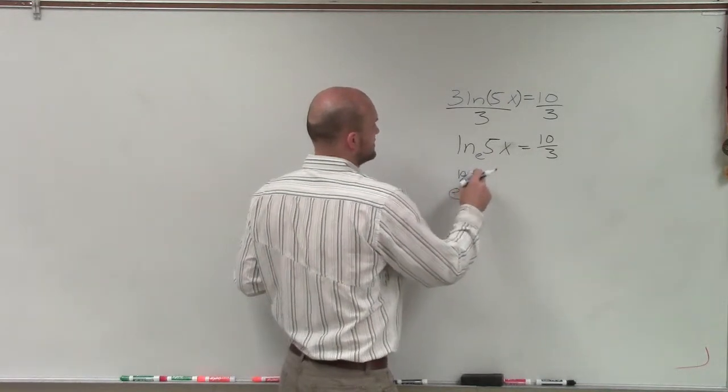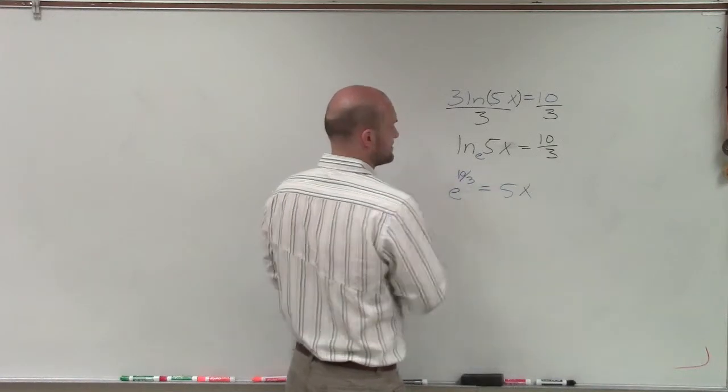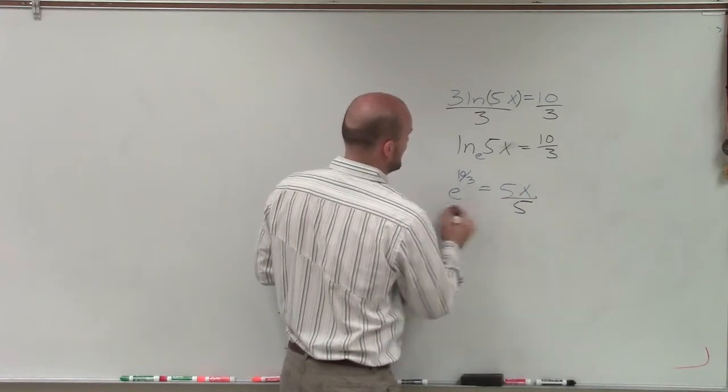So it would be e to the 10 thirds equals 5x. So then to solve for x, I'm just going to divide by 5.